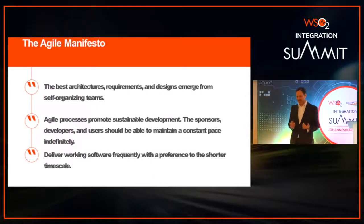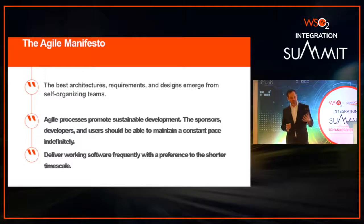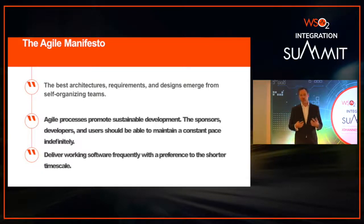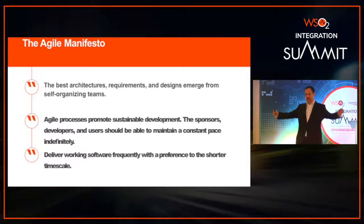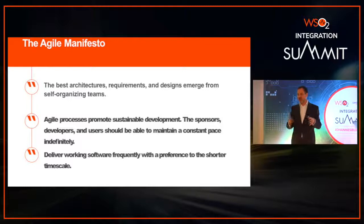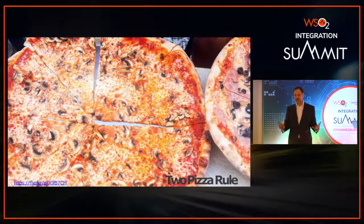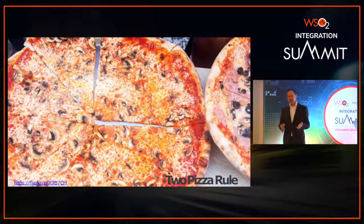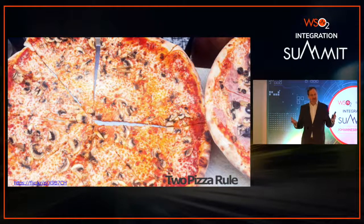The Agile Manifesto says that the best architectures, the best code, and the best understanding come from self-organized teams. If you really want to get agility, you need small, effective teams who understand the business domain and the problem — it's up to them to solve it. It's not command and control, it's bottom up. We all know Jeff Bezos' two-pizza rule: teams you can feed with two pizzas, roughly 8 to 12 people max.